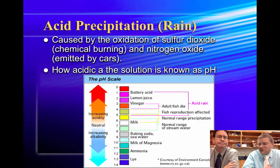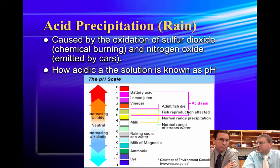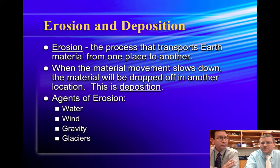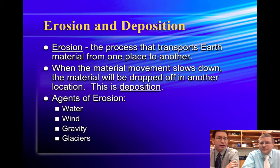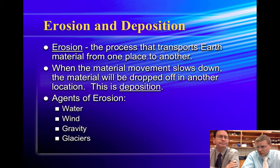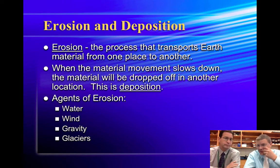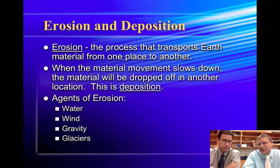That pretty much covers physical versus chemical weathering. When you see a scenario, think: is it just physically breaking from a large piece to a small piece, or is it changing the internal chemistry of the material? Once the rock is broken down, two more things can happen. First, it will move from the place it broke down to somewhere else — that's called erosion. The second thing is deposition, which means it gets placed somewhere. Erosion is the movement of material; deposition is when it's dropped off in a different location.